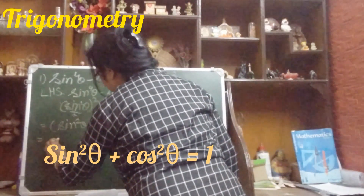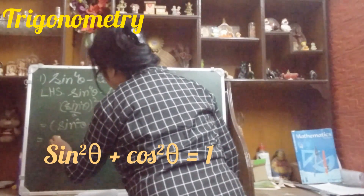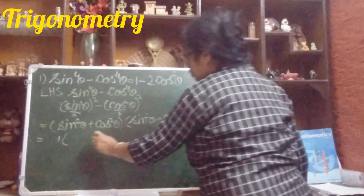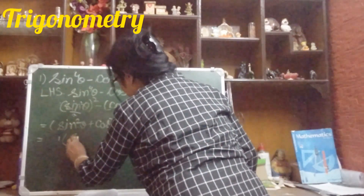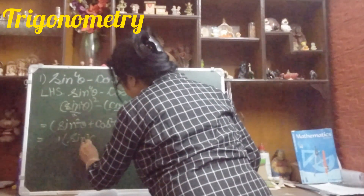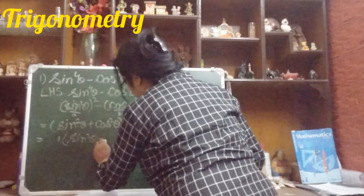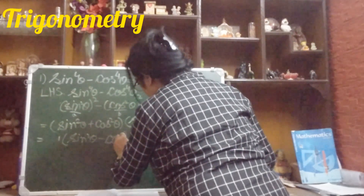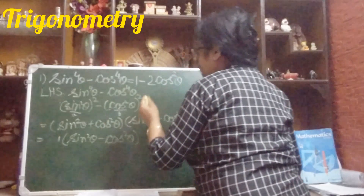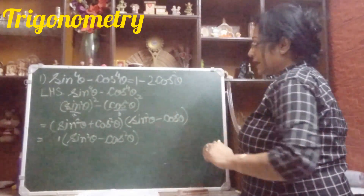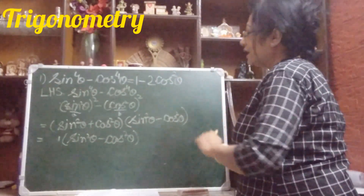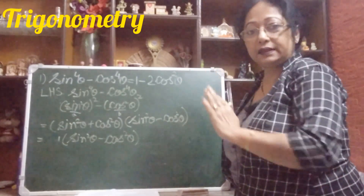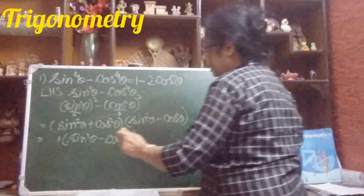So we write 1 immediately. Now what remains is sin²θ minus cos²θ. Keep your right hand side in mind — the right hand side is 1 minus 2cos²θ.